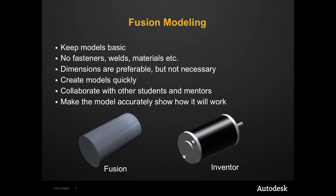Finally, it's also important to make models as dimensionally accurate as possible without wasting time doing so. What I mean by this is: try to keep models within the build parameters defined by the rulebook. For example, you shouldn't model an idea that is 10 feet tall when the rulebook limits heights to four feet.